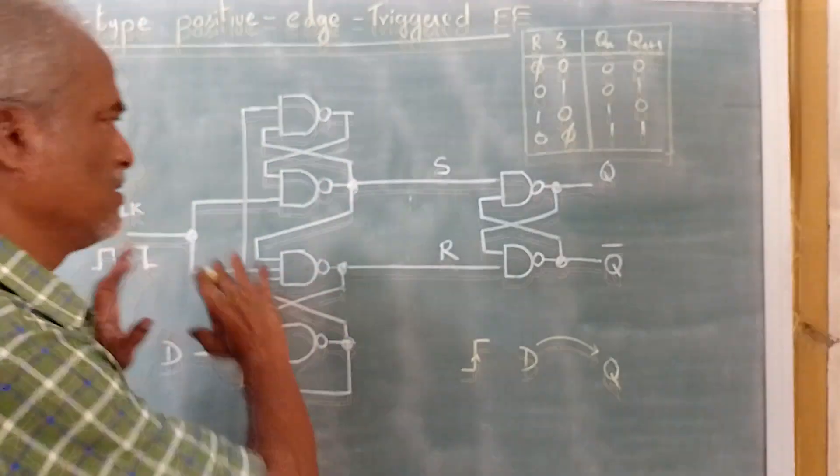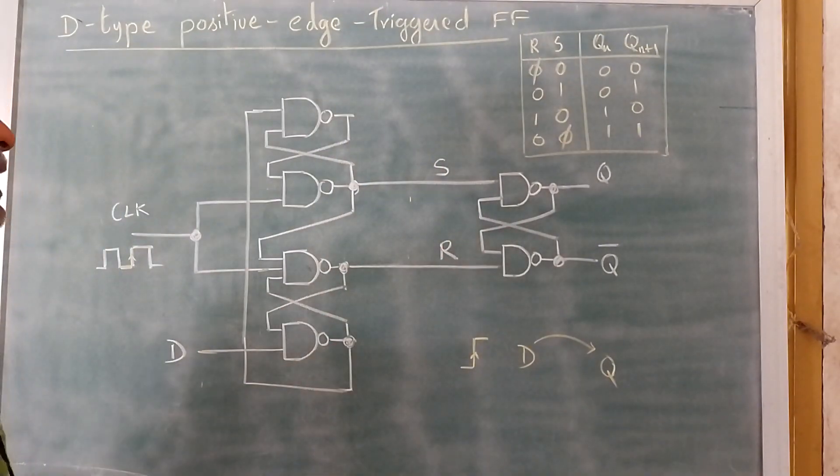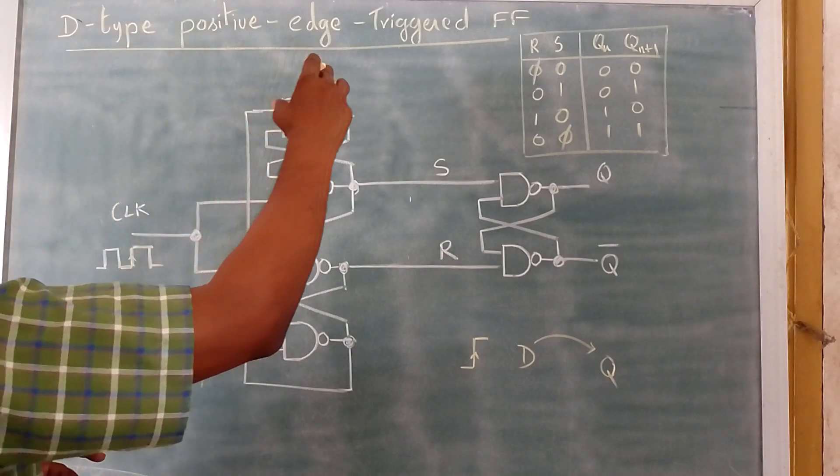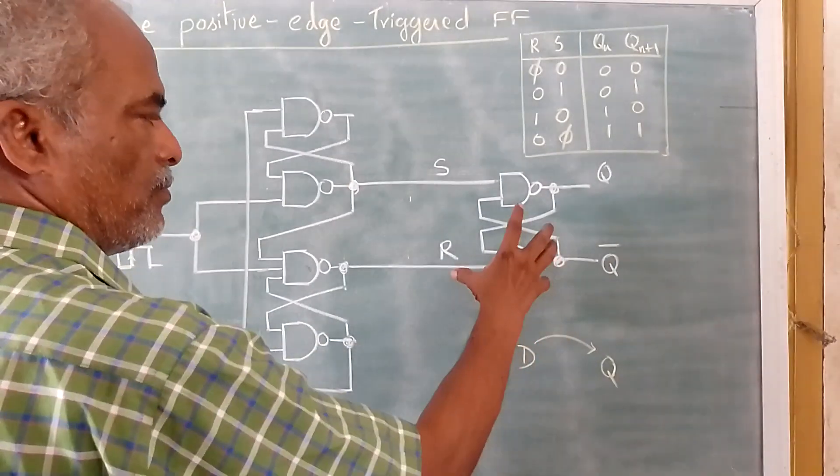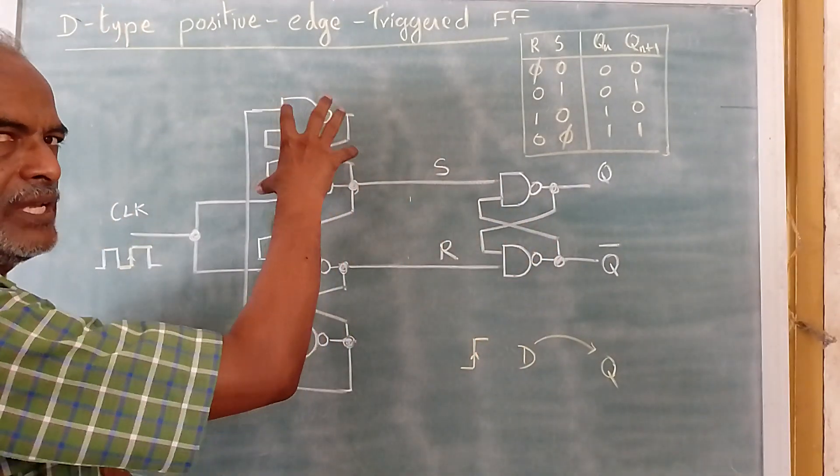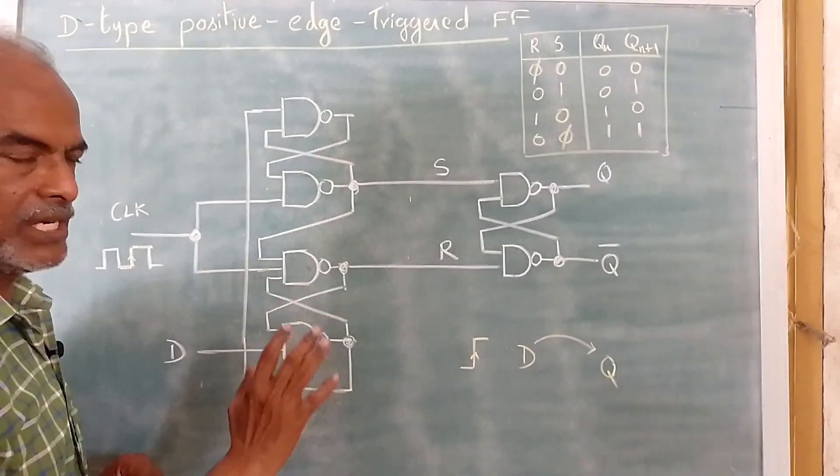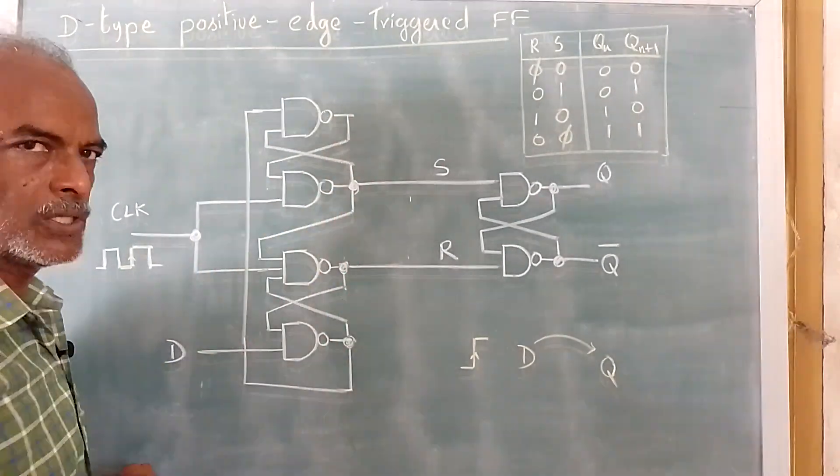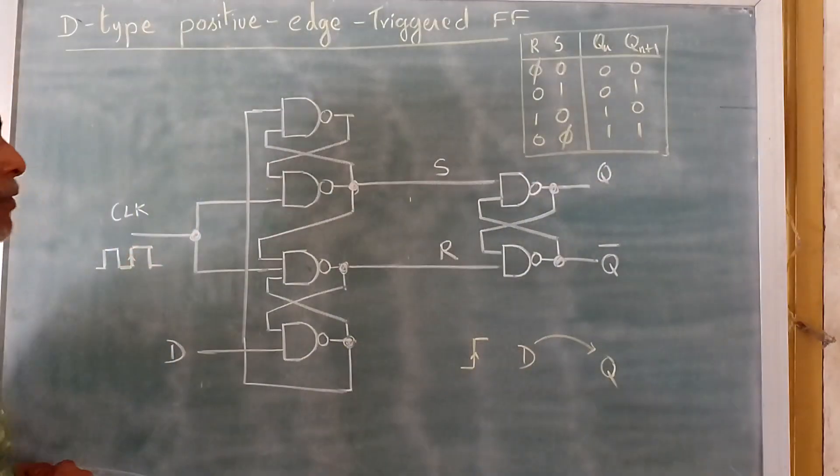So this is the basic circuit diagram, digital logic circuit diagram of D-type positive edge triggered flip-flop. This is SR flip-flop, we have three kind, three same type of arrangements here, of course slight modification. The overall circuit is called D-type positive edge triggered flip-flop.